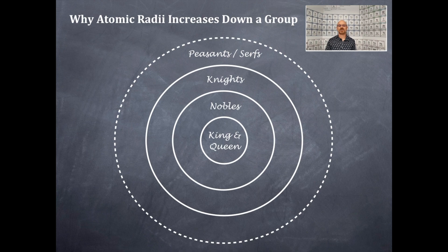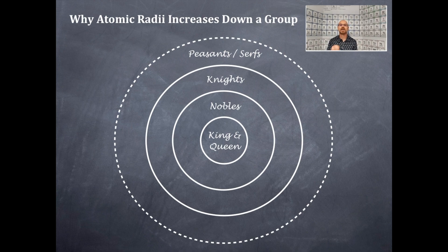I'm going to give you an analogy. If you look at this diagram, I have the king and the queen right in the middle. Right outside the king and the queen are the nobles. Outside the nobles are the knights. Outside the knights are the peasants or the serfs. The king and the queen are like the nucleus — the Z — where the protons and the positive charge are. Everyone wants to feel the positive charge of the king and the queen.